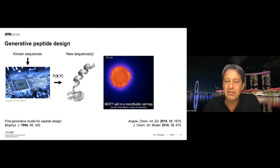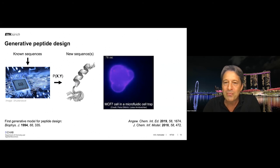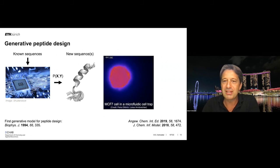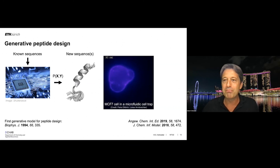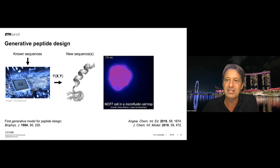Here is a small video: what you see is a breast cancer cell — an MCF7 cell — trapped in a microfluidic trap, expressing a fluorescent protein. When the peptides are added, flowing from left to right, the membrane of this cancer cell dissolves, pops open, and bursts. These completely new, computer-generated peptide sequences — natural amino acids but novel sequences — can selectively kill cancer cells without affecting healthy, non-transformed human cells.